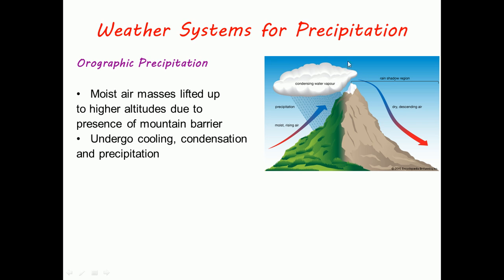It won't go above this because of the presence of mountain barrier. Here itself it condenses and forms precipitation.